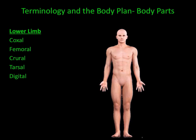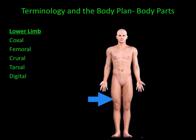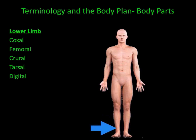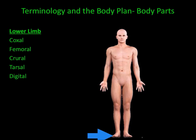Next, we'll take a look at the body parts of the lower appendicular skeleton. Coxal refers to the hips. Femoral refers to the thigh or leg. Crural refers to the lower leg. Tarsal refers to the ankle. And finally, digital refers to the toes.